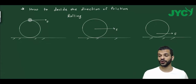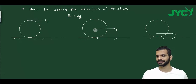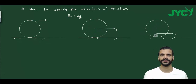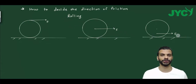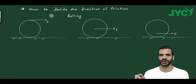In the first case, the external force is tangential at the top of the body. The second case has force at the center of mass. The third case also has force at the center of mass but at a different position. I will show you how to solve the question and decide friction direction using a shortcut method.